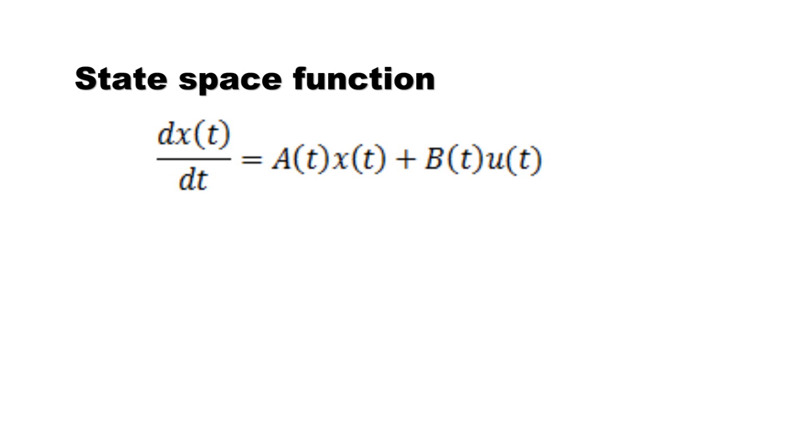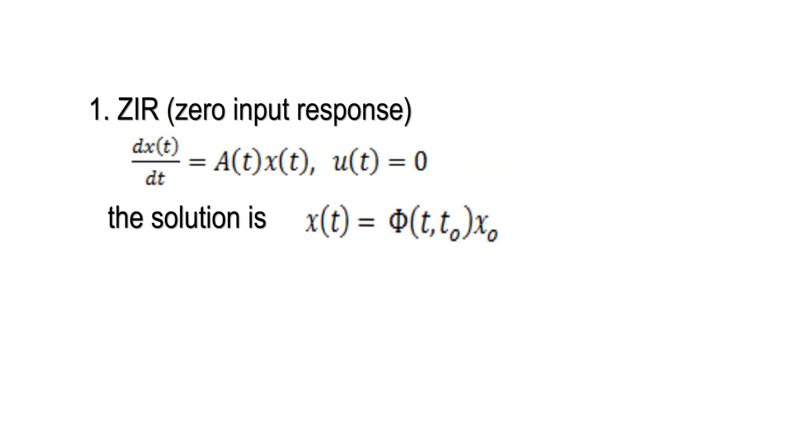For a linear system which has the state space function like this, we can get the solution of the equation or the evolution of the system by using state transition matrix. When there is no input, then the state transition matrix times the initial condition will give the state at t. We call it zero input response.